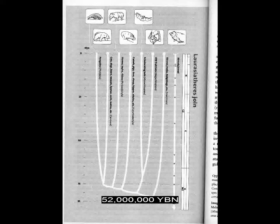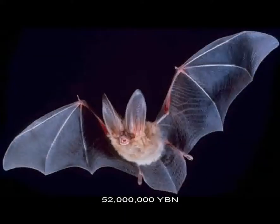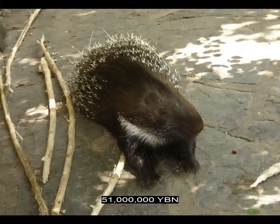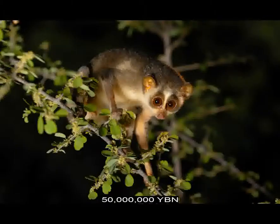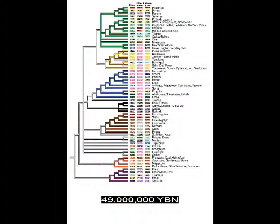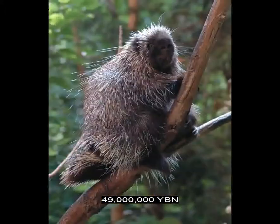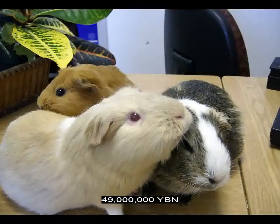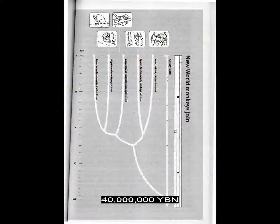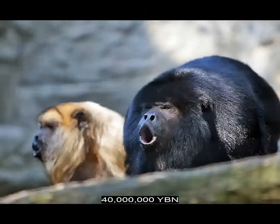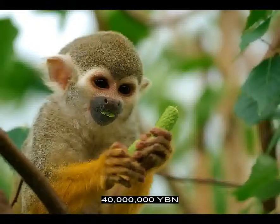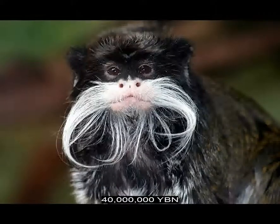Laurasiatheria Chiroptera — fruit bats, echolocating bats. Rodents old world porcupines. Primates: lorises, bushbabies, pottos. Birds Falconiformes — falcons, hawks, eagles, old world vultures. Rodents: new world porcupines, guinea pigs, capybaras. Primates new world monkeys — spider, howler, and squirrel monkeys, capuchins, tamarins. Birds Cuculiformes — cuckoos, roadrunners. Last common ancestor of dolphins and whales. Primates true lemurs.